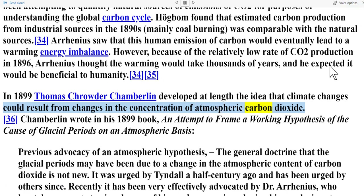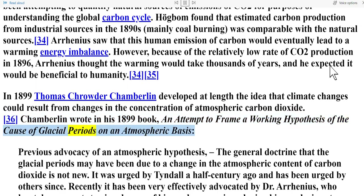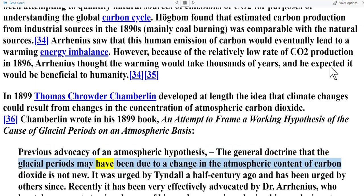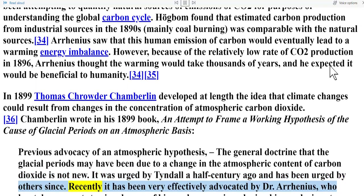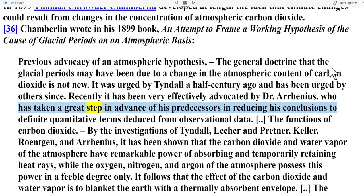In 1899, Thomas Crowder Chamberlin developed at length the idea that climate changes could result from changes in the concentration of atmospheric carbon dioxide. Chamberlin wrote in his 1899 book that the general doctrine that glacial periods may have been due to a change in the atmospheric content of carbon dioxide is not new — it was urged by Tyndall a half century ago — and that Arrhenius had taken a great step in advance by reducing his conclusions to definite quantitative terms deduced from observational data.